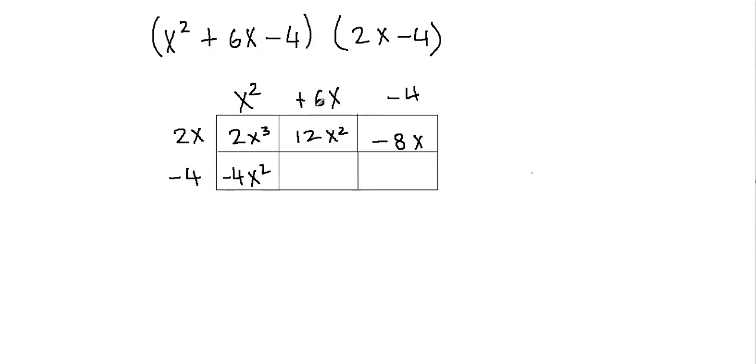Then negative 4 times positive 6x, well, negative 4 times positive 6 will be negative 24, and then we have x attached to it. So this will give us negative 24x, and then negative 4 times negative 4 would be positive 16 because the product of two negative numbers is a positive number.